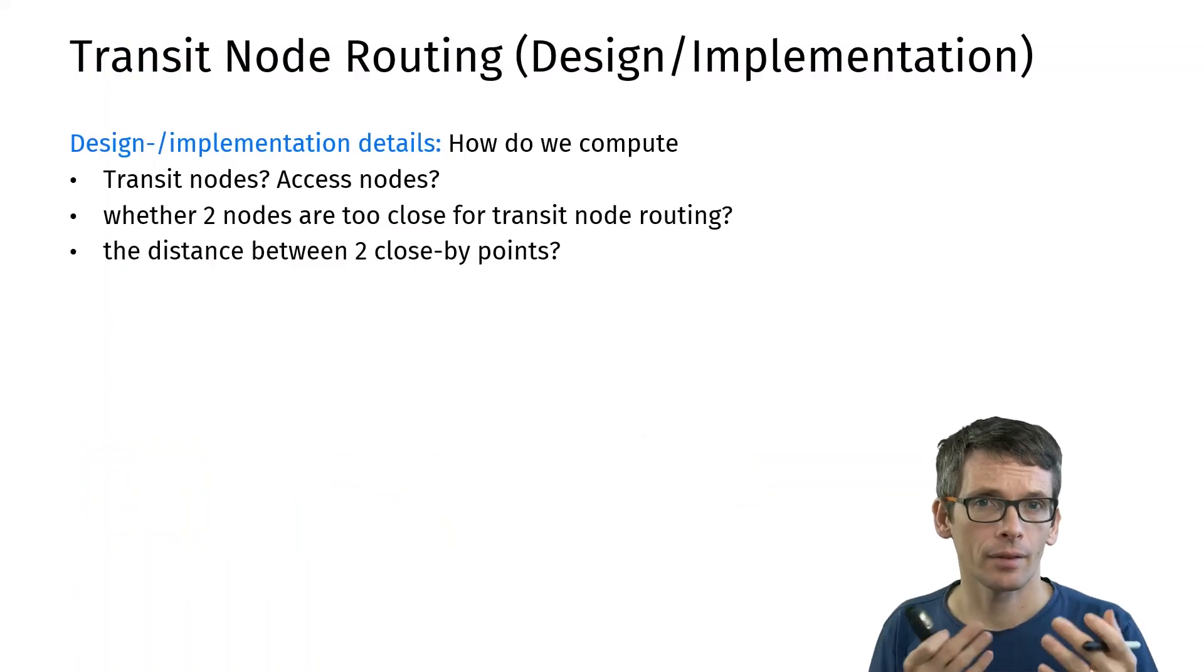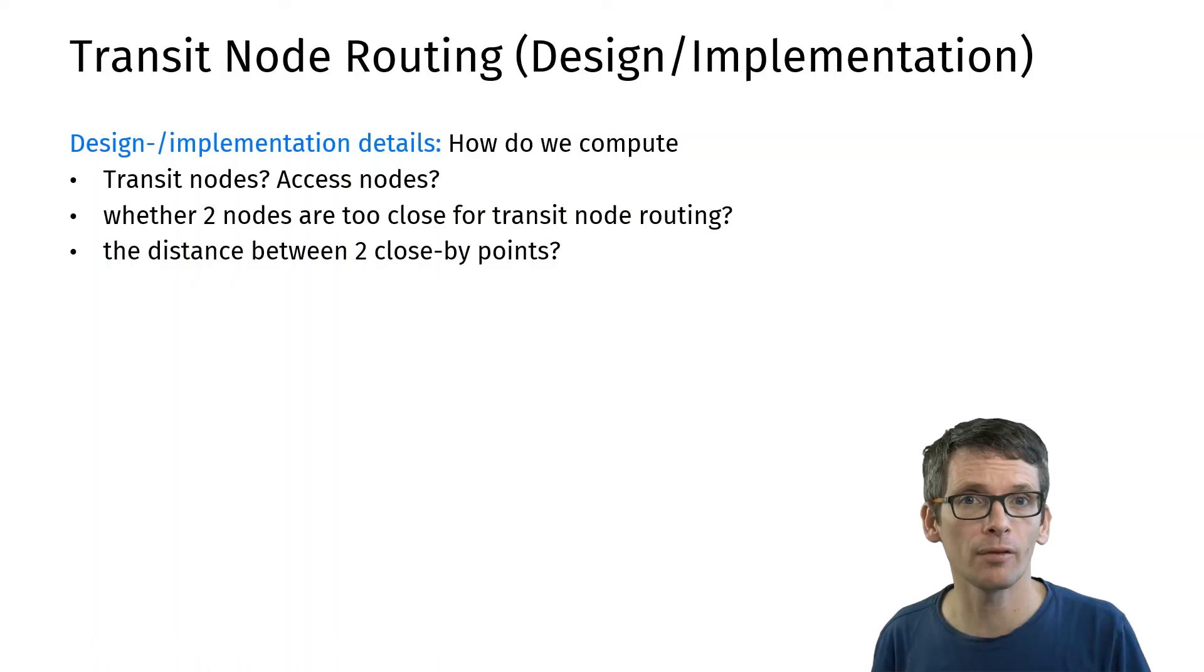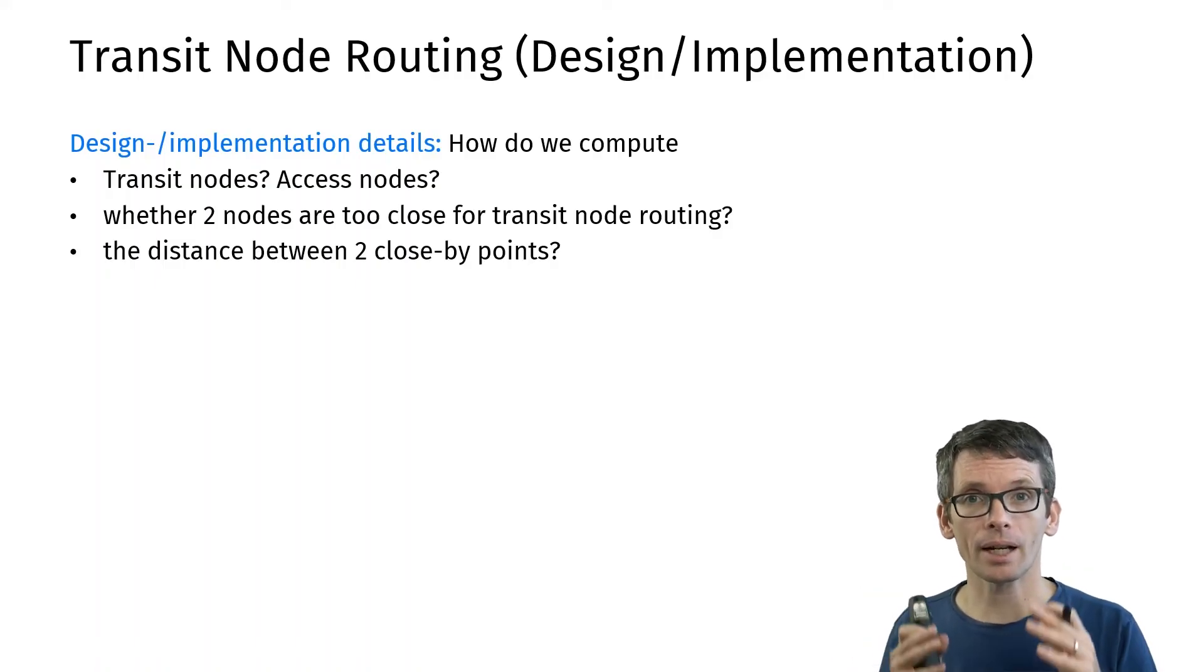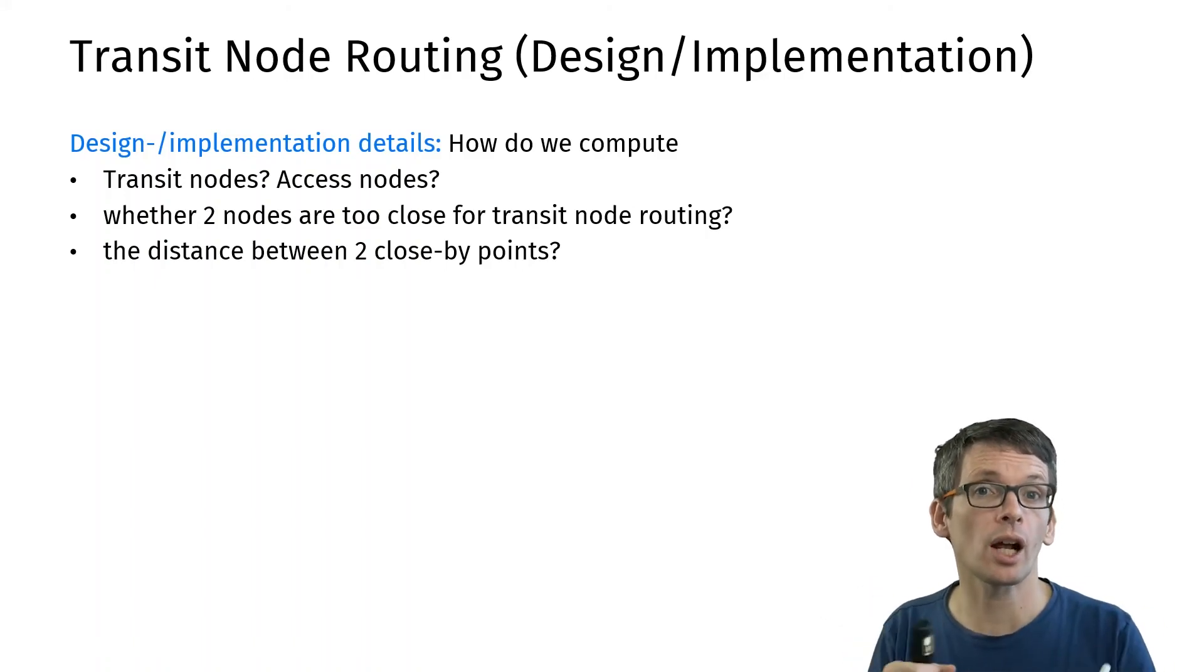There are many design and implementation questions that I left open so far and which I also will simply leave open in this video. For instance, the question of how do I compute the transit nodes? That's a very interesting algorithmic question by itself, but also the question of how do I detect that two nodes are too close to use transit node routing, and which algorithm do I then use instead? Do I indeed use bidirectional Dijkstra?